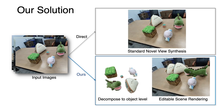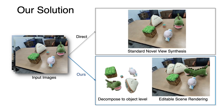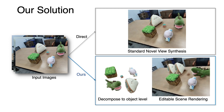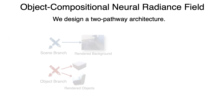The answer is yes. Here is our solution. Given captured images, instead of encoding the scene as a whole, we learn an object compositional neural radiance field and support realistic rendering with editing capability for real-world scenes. To fulfill this goal, we first design a two-pathway architecture: the scene branch and the object branch.